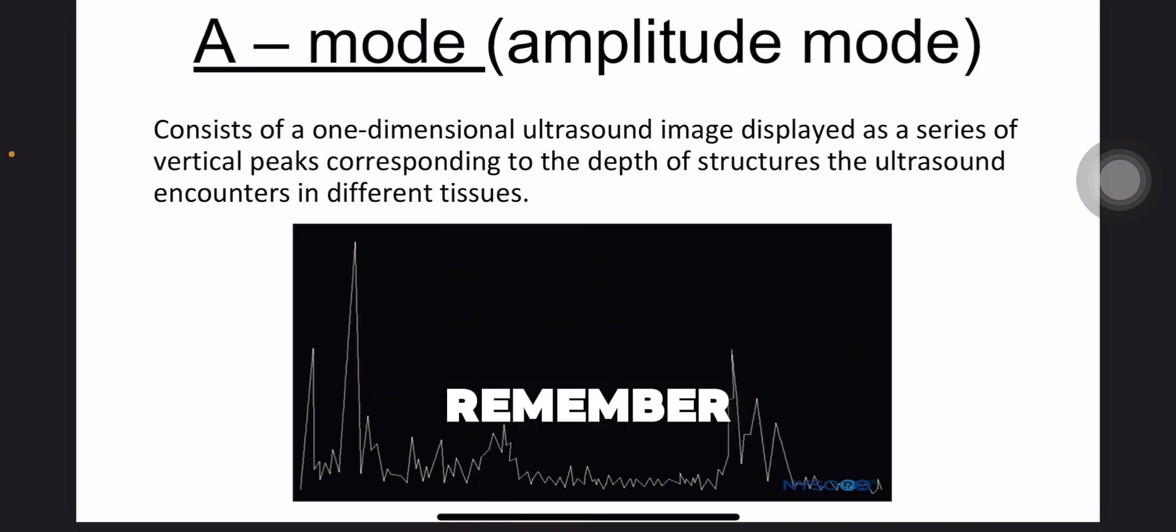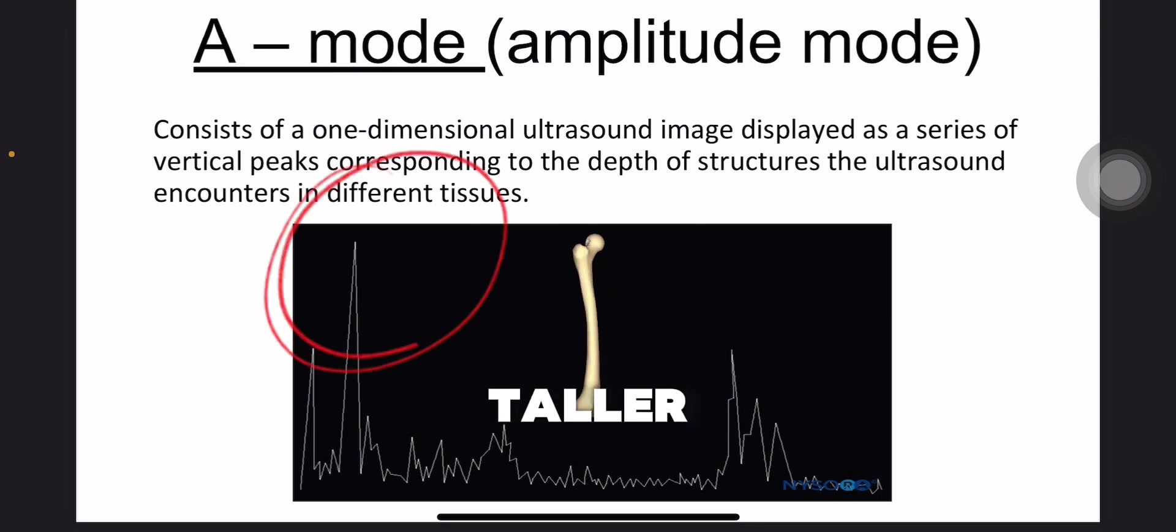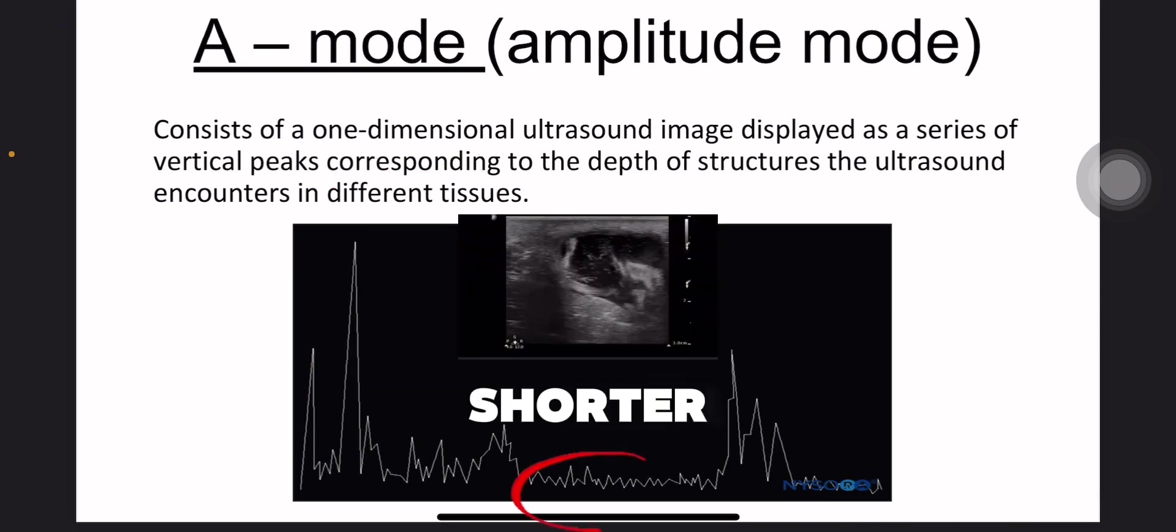Remember, a stronger echo, meaning a significant difference in tissue density or the harder the object or material, will produce a taller peak, while a weaker echo will result in a shorter peak.